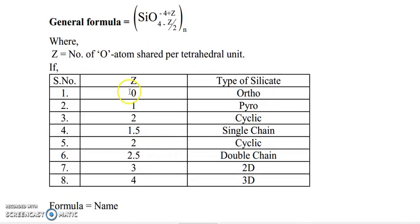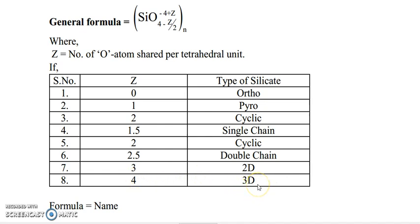If Z equals 0, then it is orthosilicate. If Z equals 1, pyrosilicate. If Z equals 2, cyclic silicate. If Z equals 1.5, single chain silicate. If Z equals 2.5, double chain silicate. If Z equals 3, 2D silicate or sheet silicate. If Z equals 4, 3D silicate or tectosilicate. You can identify the Z value from the general formula.